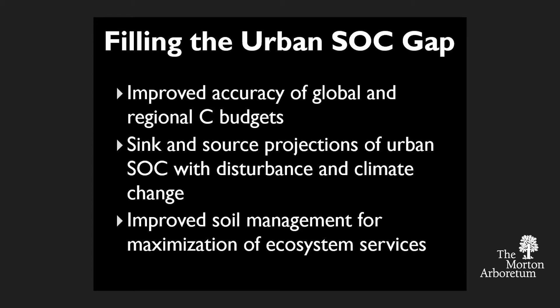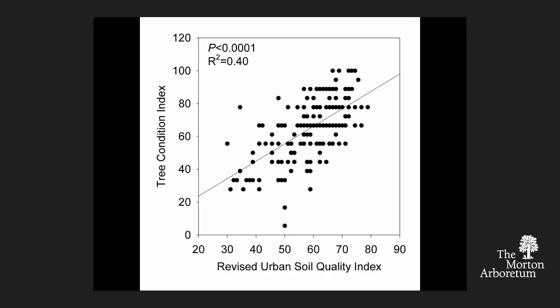If we get a better idea of urban soil carbon storage, we can project what would happen when we disturb it or under different climate change scenarios — will that soil be a future sink or potentially a source for carbon? Also, soil organic matter is about 50% carbon and is one of the primary determinants of soil quality. We are creating an urban site index, a field diagnostic tool that assesses soil carbon and other parameters, and we're finding it is a good predictor of overall tree condition.